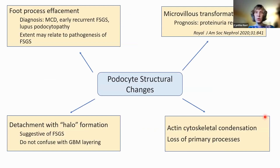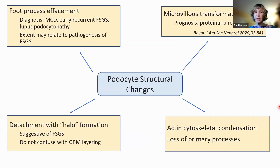Looking at podocyte structural changes, foot process effacement is necessary for diagnosis of minimal change disease and early recurrent FSGS in transplants, as well as lupus podocytopathy. The extent of foot process effacement may relate to the pathogenesis of FSGS — primary FSGS or some forms of secondary genetic FSGS, particularly in genes that code for proteins in the slit diaphragm.